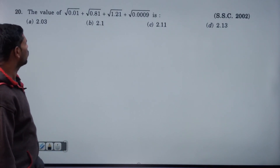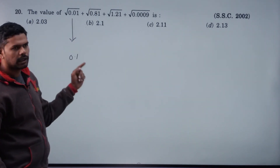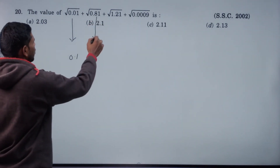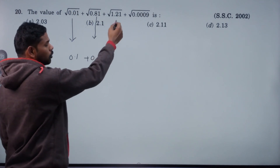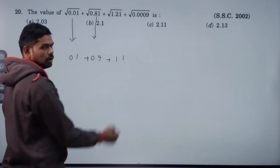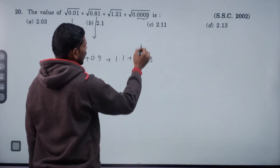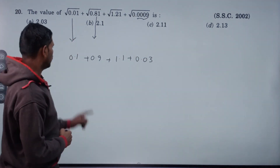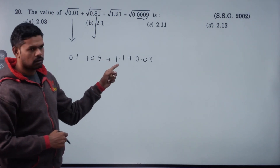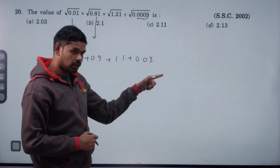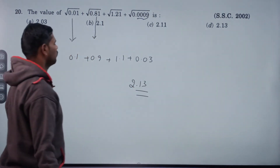The value of root of 0.01 is 0.1. Root of 0.09 is 0.3. 0.1 plus 0.9 is 1. 1 plus 1.1 is 2.1. 2.1 plus 0.03. Value is 2.13.